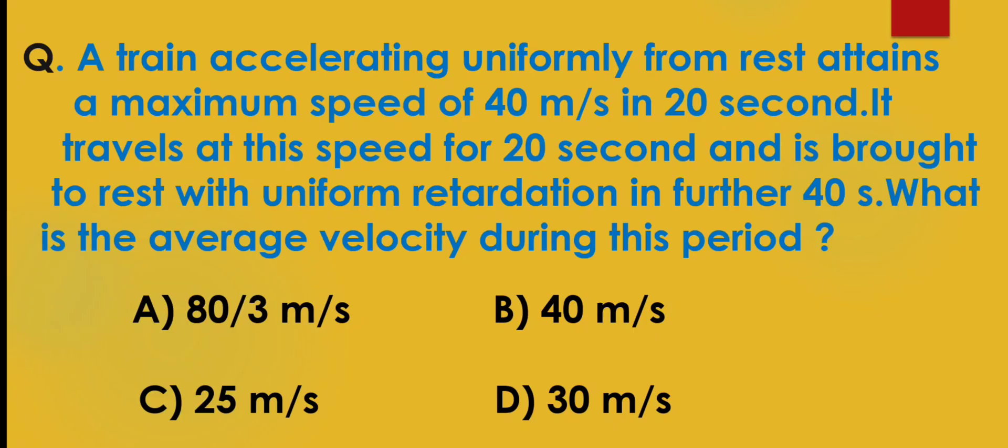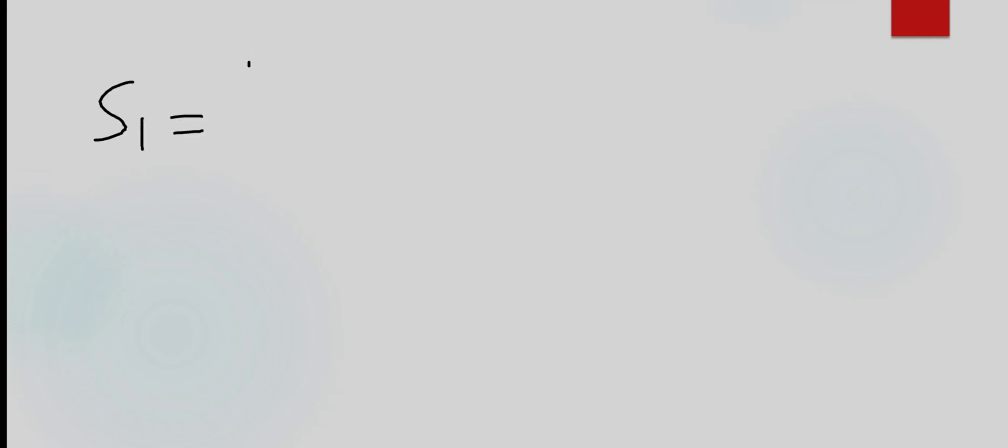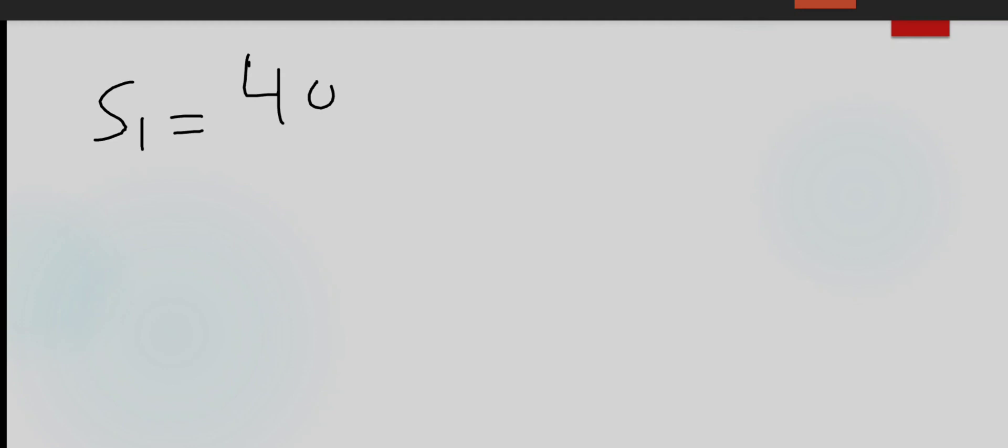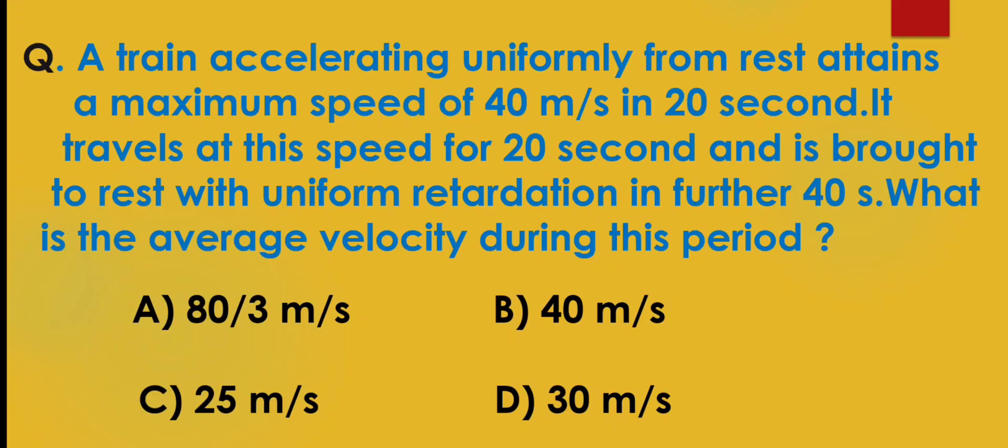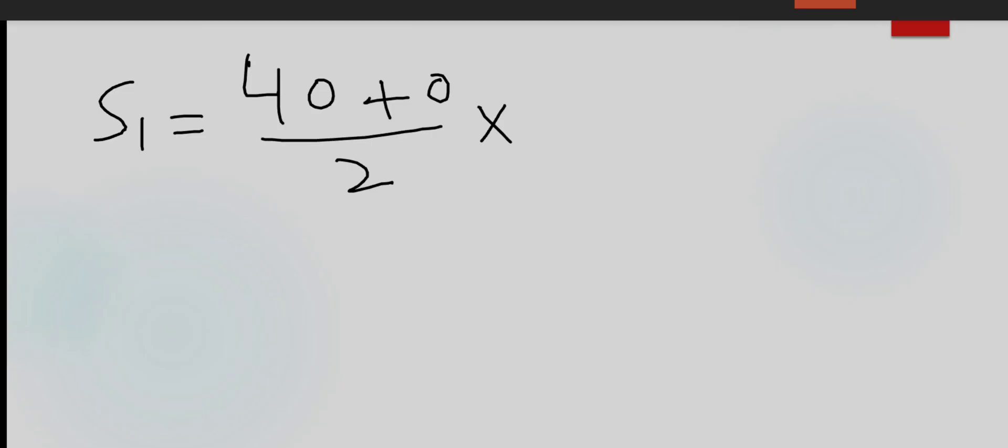S1 will be equal to the average speed, which is 40 plus 0 upon 2 into time, which we have obtained is 20 seconds. So when we simplify, we get the final answer S1 equals 400 meters.